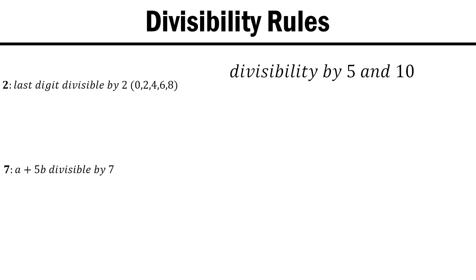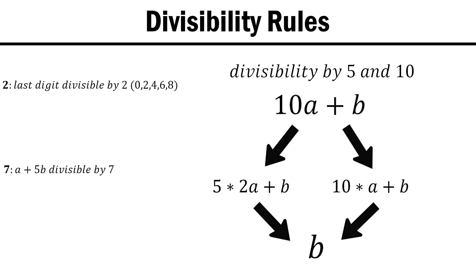The same logic, by the way, can be used for 5 and 10. They will also always divide 10a, and therefore our number will only be divisible by 5 or 10 if its last digit is. For 5, this means the last digit must be a 0 or a 5, and for 10 it can only be a 0.